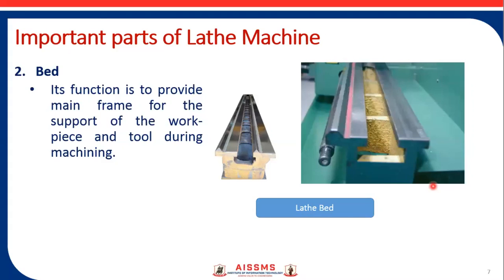The next important element is the bed. It is also manufactured with the process of casting. Its main function is to provide the mainframe for support of the workpiece and tool during machining operation. The lathe bed is manufactured with the help of casting, and the main function of this bed is to withstand the higher amount of forces occurring in a cutting operation.